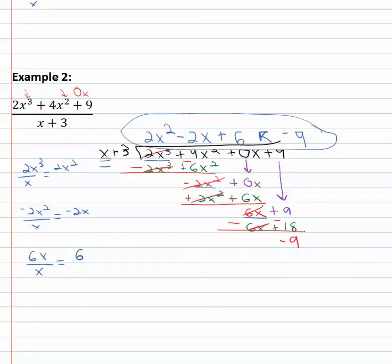Our quotient then is two x squared minus two x plus six with a remainder of negative nine. As we're setting up our long division, it's very important to remember that the exponents must count down and no exponent can be skipped. Which means on occasion we'll have to add zero, zero x, zero x squared, or whatever needed term is missing.